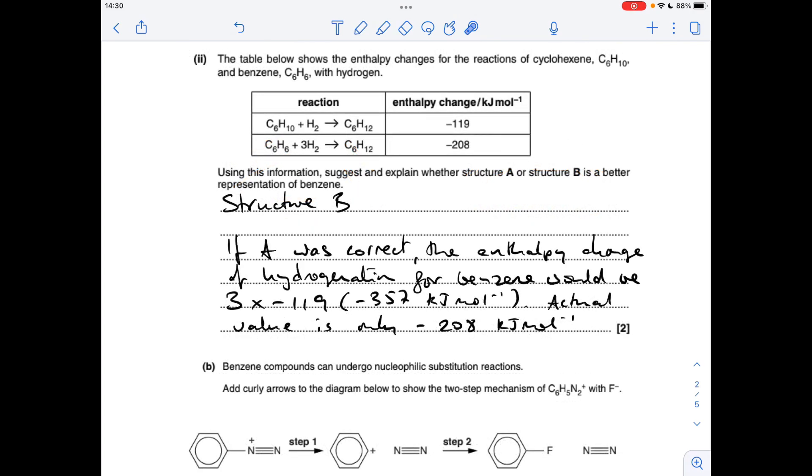Next part, obviously we know the answer is B because we're familiar with that delocalised structure for benzene as opposed to the Kekule structure. But how do we use this information to show it? So if A was correct, then the enthalpy change of hydrogenation for benzene would be three times that value. So it would be minus 357 kilojoules per mole, but we know that the actual value is less than that. It's only minus 208. So because of that, A can't be right.